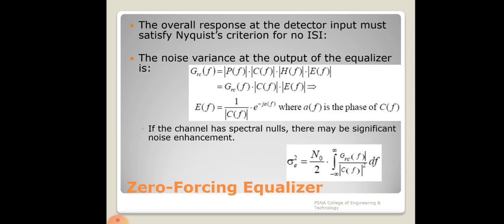We can express the noise variance at the output of the equalizer by taking all transfer functions into account: transmit filter, channel, receiver, and equalizer together. When the channel has spectral nulls, significant noise enhancement will occur at the output variance.